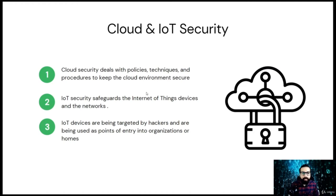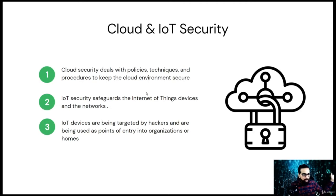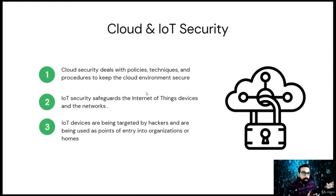Similarly, IoT security safeguards Internet of Things devices and the networks they are connected to — devices such as sensors, printers, IP cameras, and all these things. Now we even have smart bulbs, smart refrigerators, smart microwaves, smart TVs, and all these devices. In order to secure all these smart devices, you need to ensure IoT security.